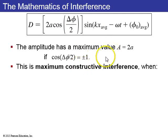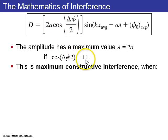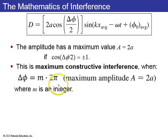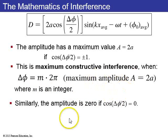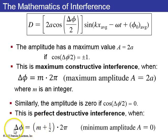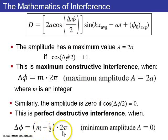Maximum constructive interference occurs when this amplitude, which depends on cosine of delta phi over 2, is maximum — that is, plus or minus 1. Cosine of delta phi over 2 is maximum when delta phi equals m times 2pi, where m is some integer 0, 1, 2, negative 1, negative 2, etc. The amplitude will be zero — perfect destructive interference — when delta phi equals (m + 0.5) times 2pi. So all the odd multiples of pi cause destructive interference.